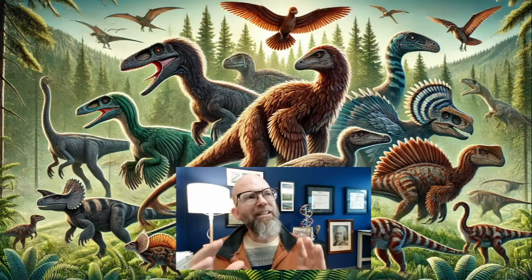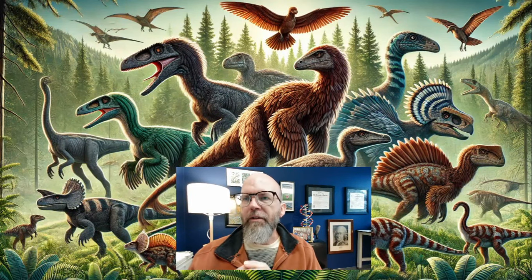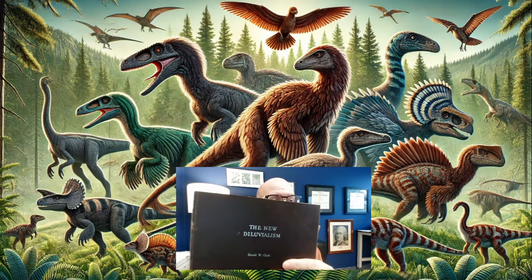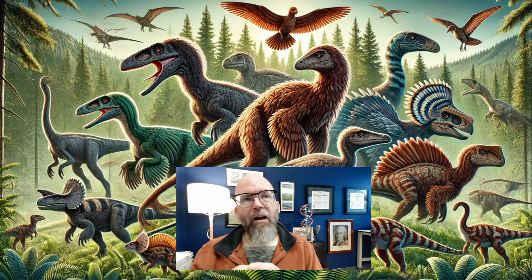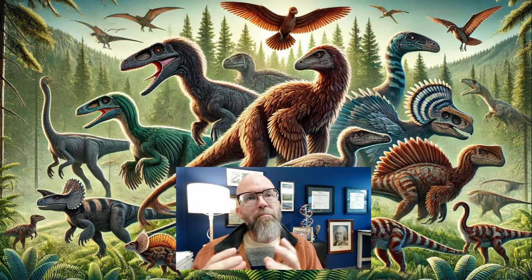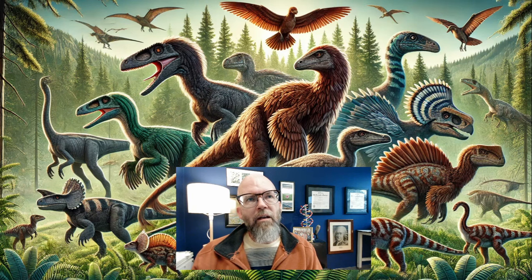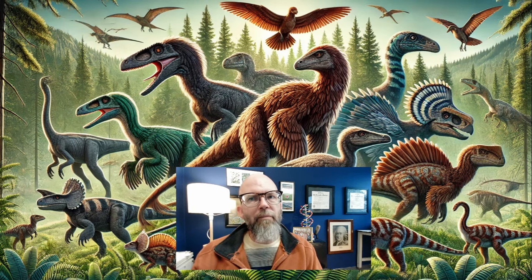We're really going to explore this topic by going back to 1946. We're going to examine a book, 'The New Diluvialism,' and see how kinds, or biblical kinds, are described in 1946 and relate that to what the kind means today.